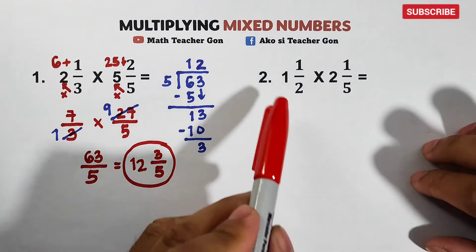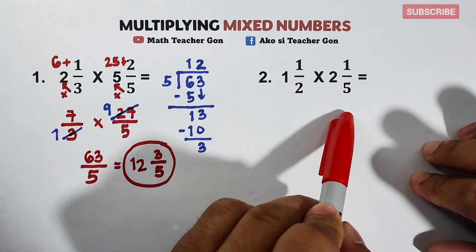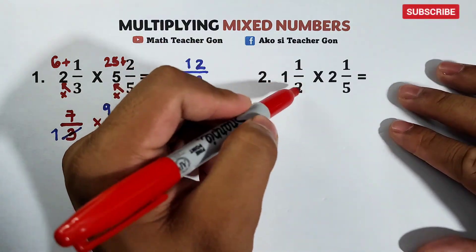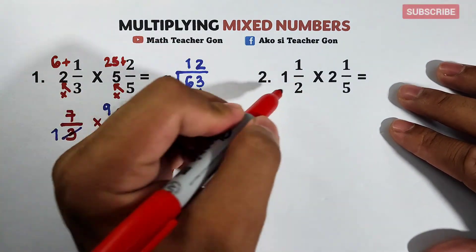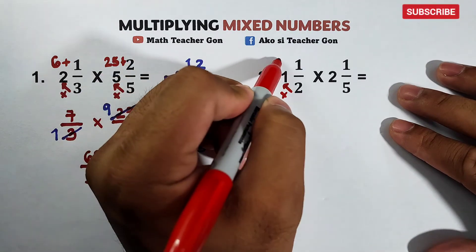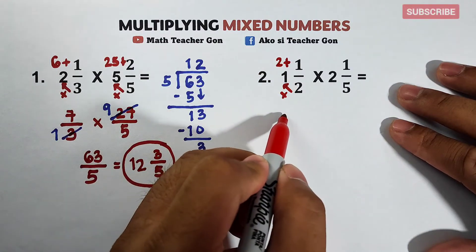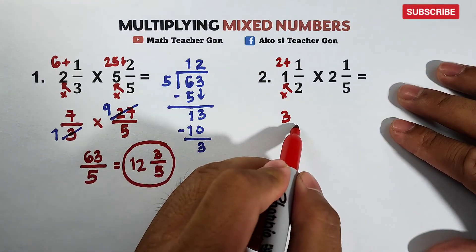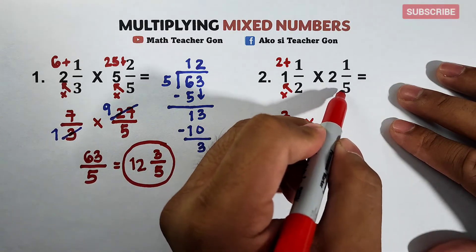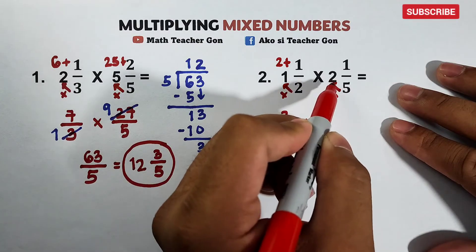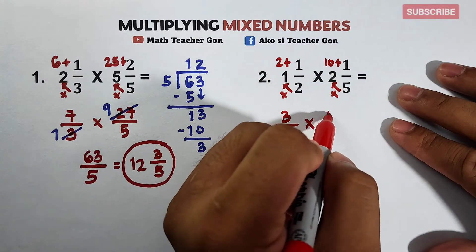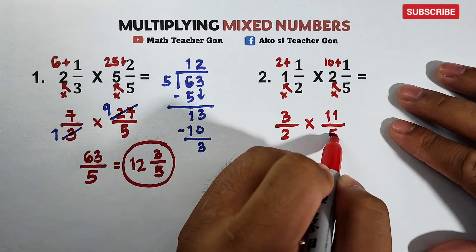In item number 2, we are given 1 and 1 half times 2 and 1 over 5. Same steps. Let's convert this into improper fraction. 2 times 1, we have 2 plus 1. That is equal to 3 over 2, and 5 times 2 plus 1 equals 11 over 5.